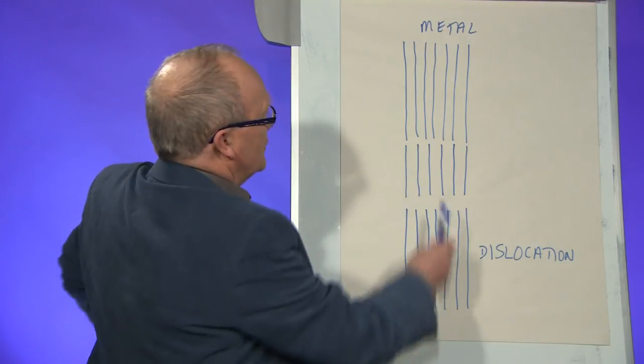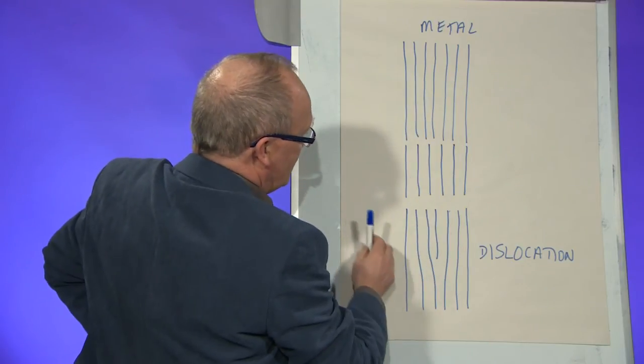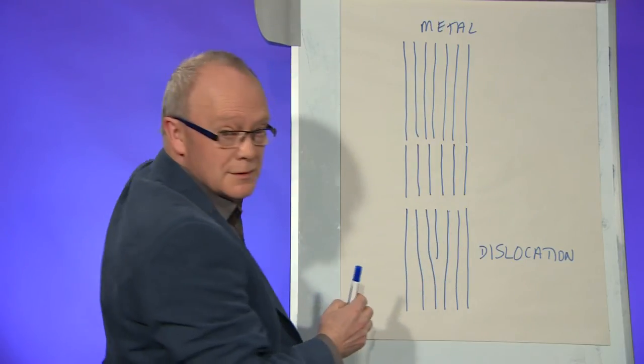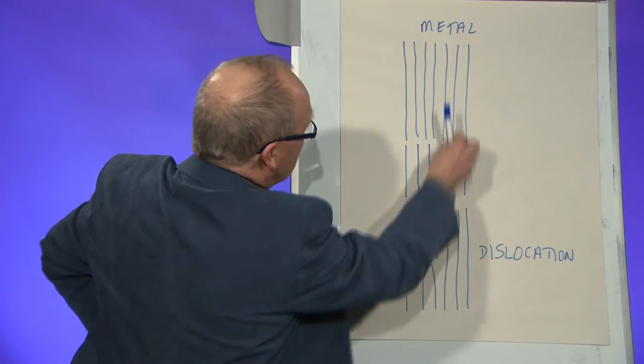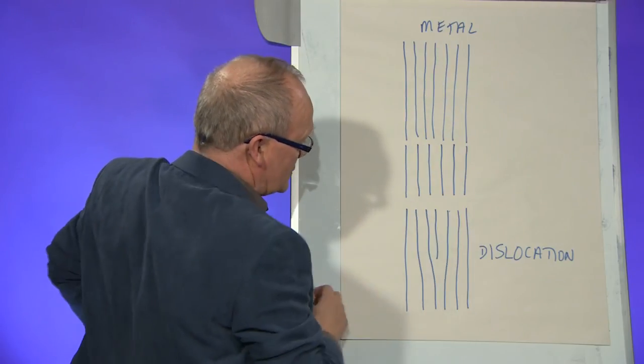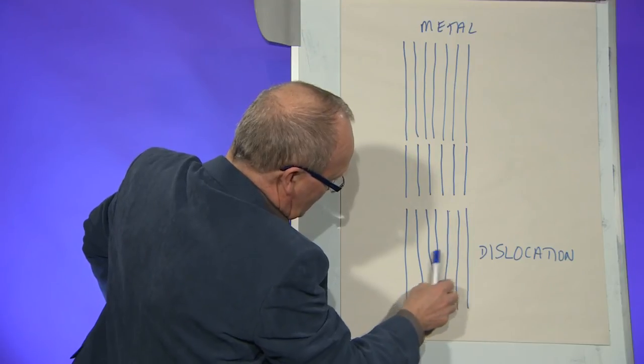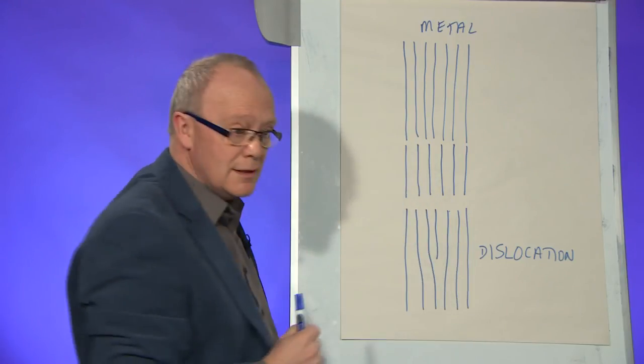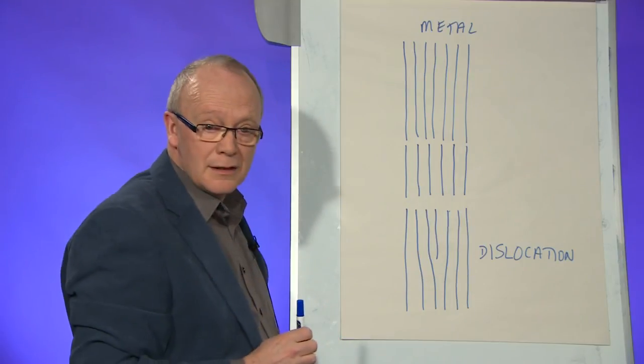In a metal we have planes of atoms and a very similar kind of defect arises which is called a dislocation. Here there is an extra plane of atoms on this side compared to this side, and the defect is highly localized. It's taken up in just one local region where there is that extra half plane.